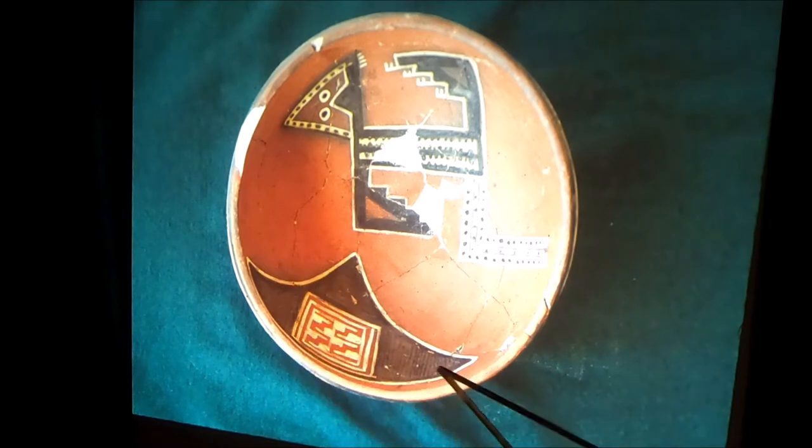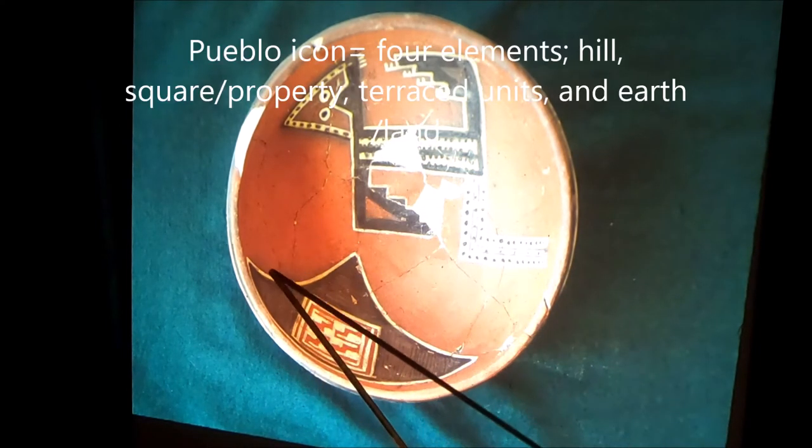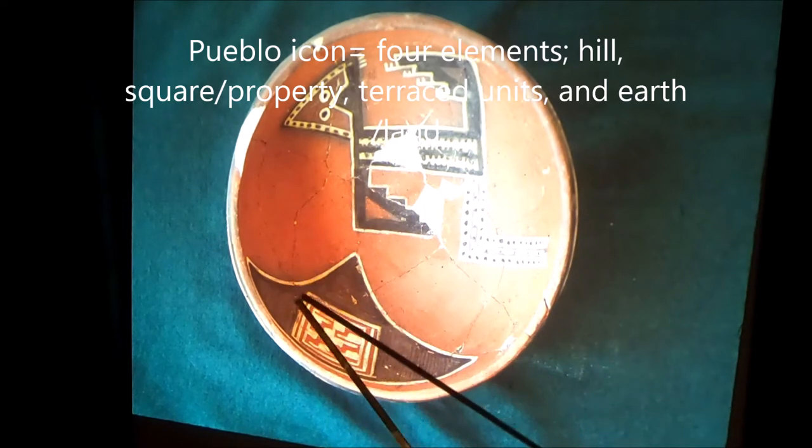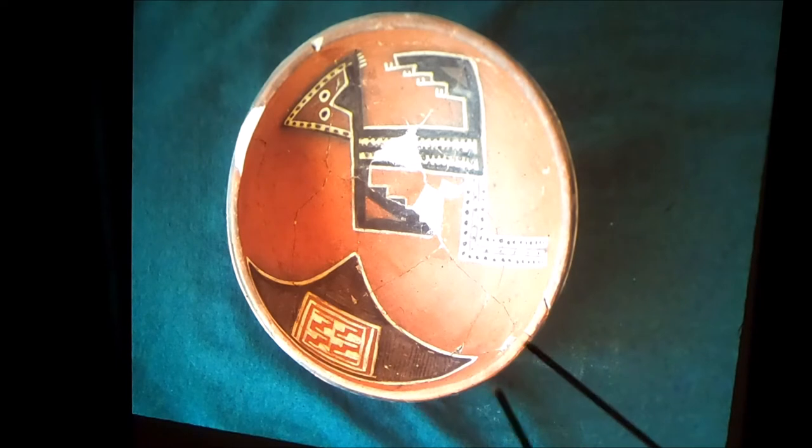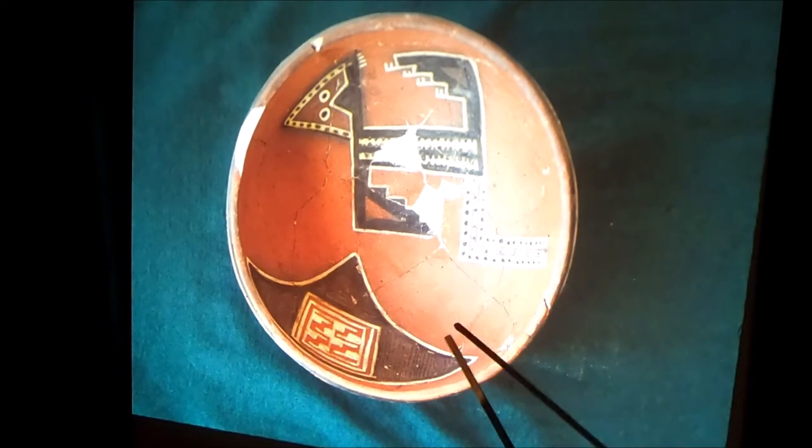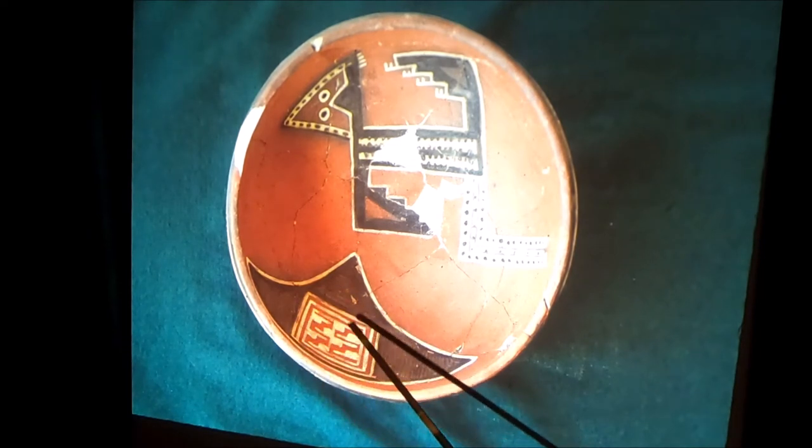Now, we're going to look at the Pueblo. This is a very graphic, very good example. Remember, there are actually four elements here. There's the square. The square represents property, place, buildings. As soon as you start planting crops, you start thinking about property, because you've got to protect them and defend them and harvest them, keep the crows away, keep your enemies away. And the buildings, the Pueblos are built in square building units.